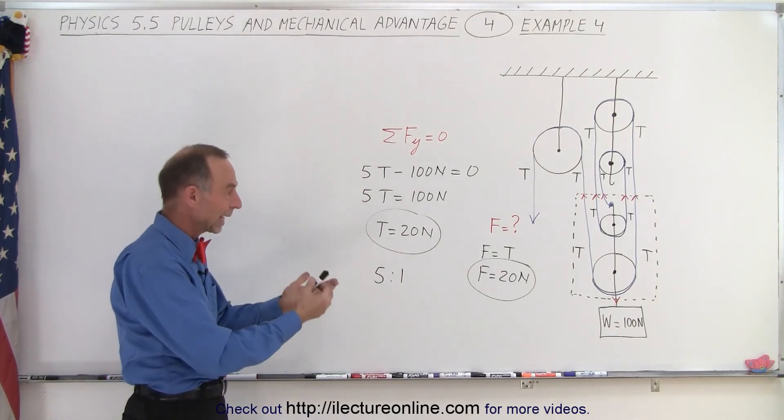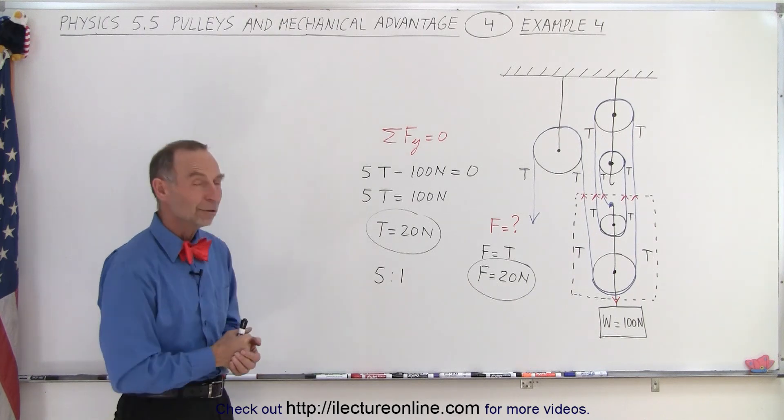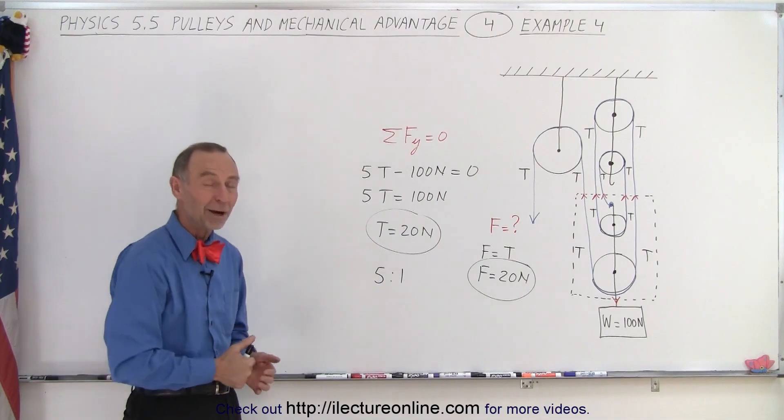And so that's what we call mechanical advantage. And in this case we need 20 newtons to lift up 100 newton weight and that is how it's done.